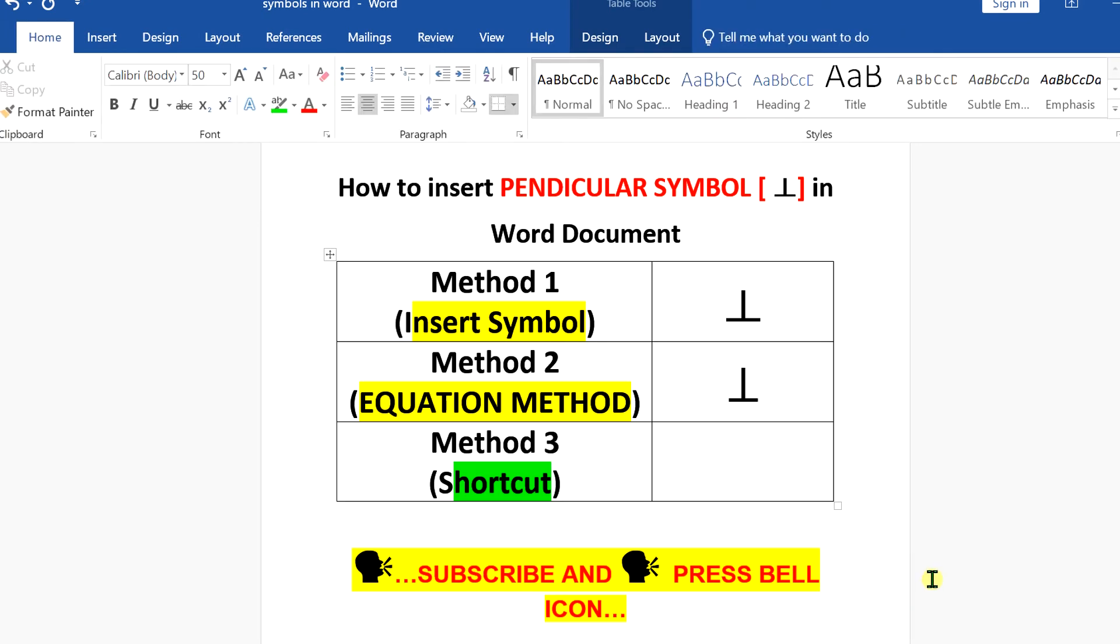The last method is a shortcut. Just type this code into the Word document and press Alt+X on your keyboard to convert it to the perpendicular symbol.